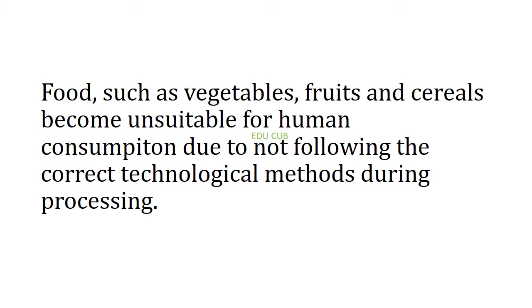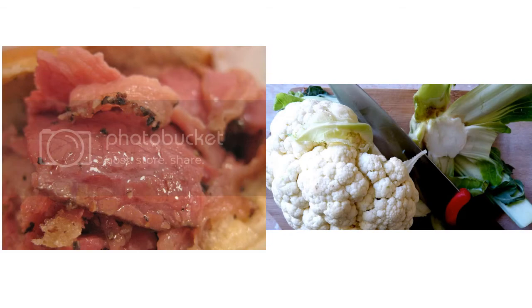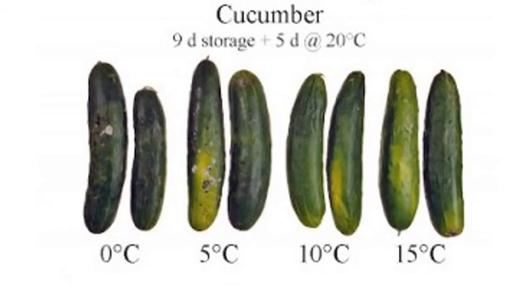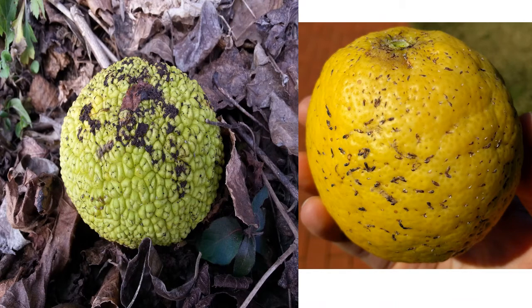Food such as vegetables, fruits, and cereals become unsuitable for human consumption due to not following the correct technological methods during grain processing. From harvesting to the market, they are subjected to bruises, cuts, lacerations, scratches, and bumps. Such damaged food becomes unconsumable as microorganisms readily act on it.